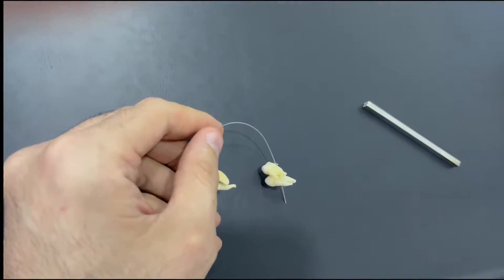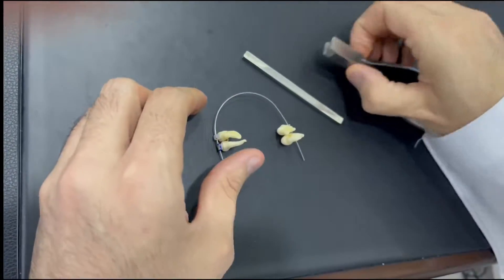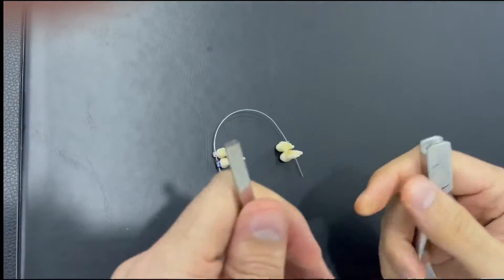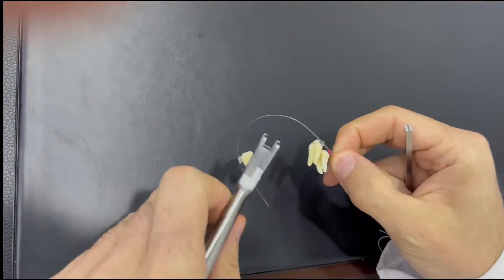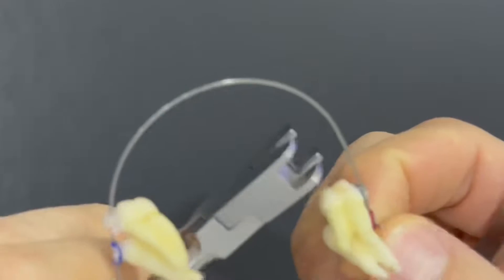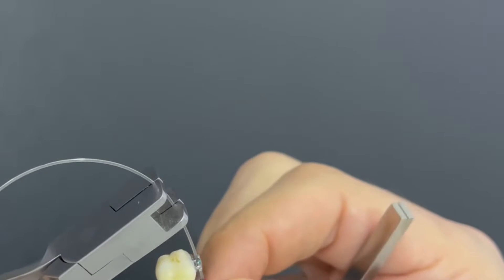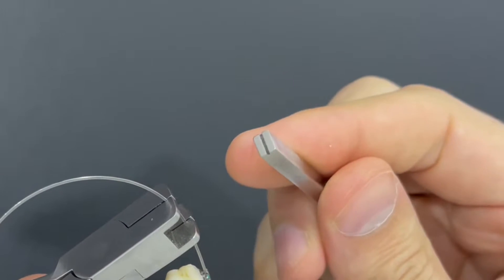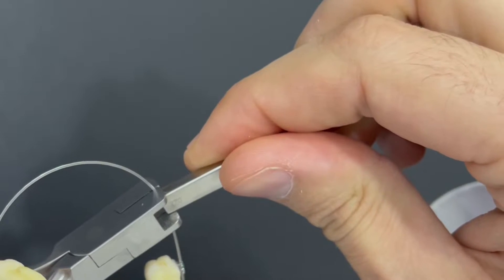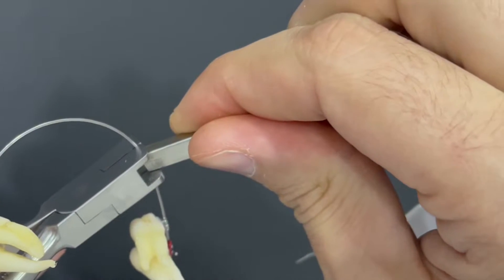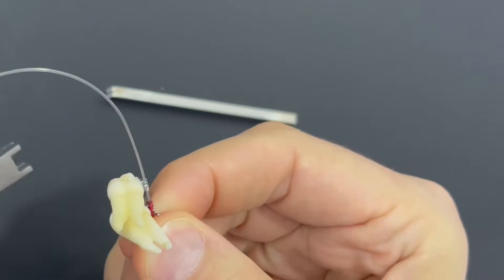I'm going to show you how we can change the torque of a single tooth using these two instruments with a rectangular stainless steel wire, locating the desired position and changing the torque.